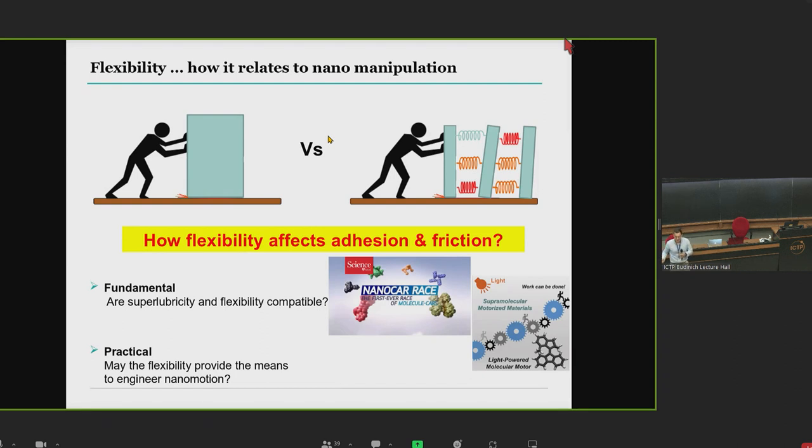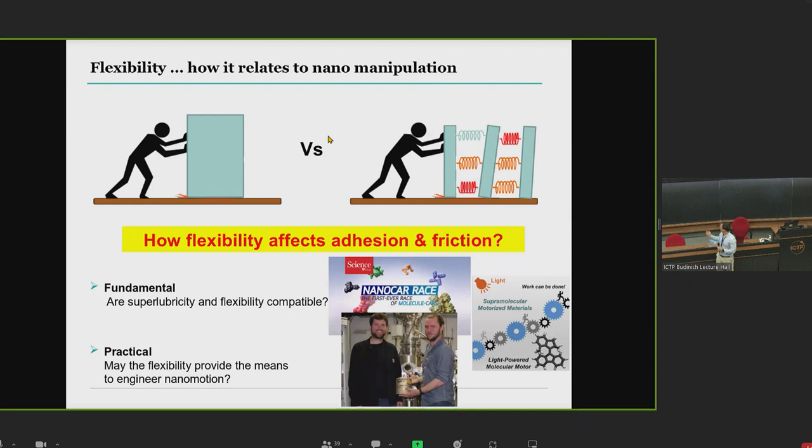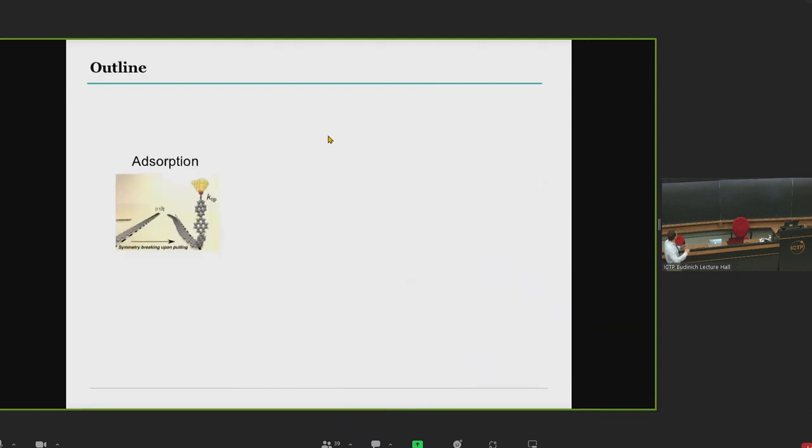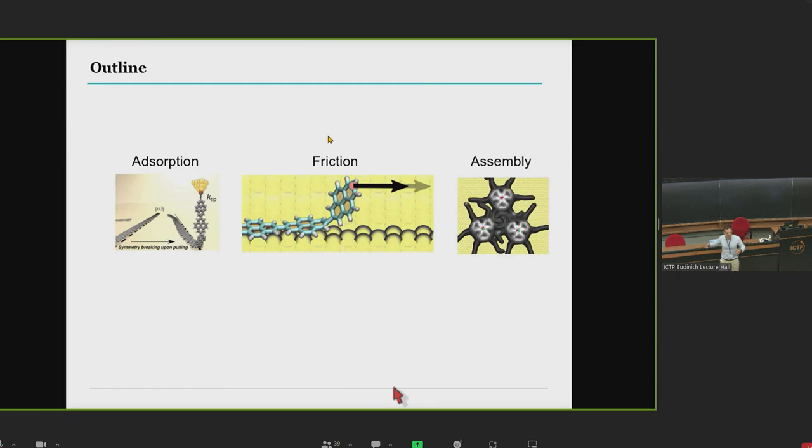This is super important for supermolecular devices. I realized how difficult it is when talking with Rémy. You might have heard about the first nanocar race, where five world leading groups had to propel their molecules over surface for a finite amount of time. Only two out of these five groups were able to do it. I'd like to discuss the role of flexibility in different processes: the adsorption, the friction, and then in a more collective effect, the motion of an ensemble of molecules.